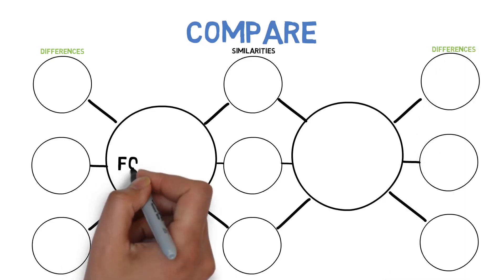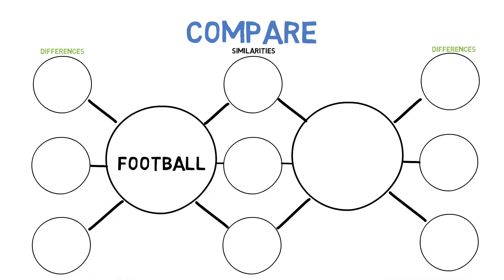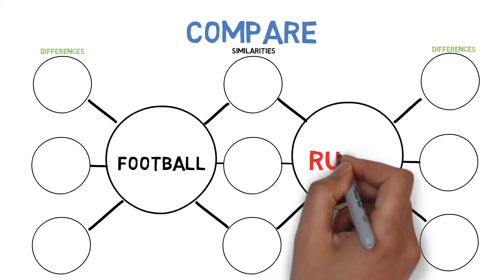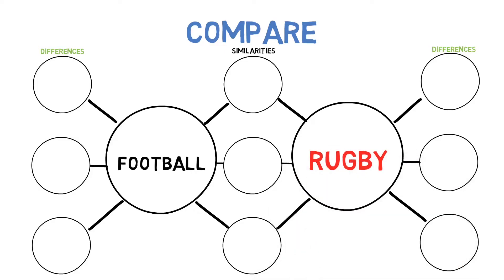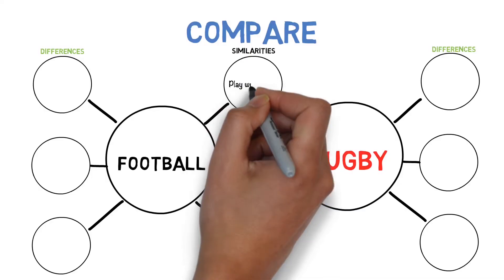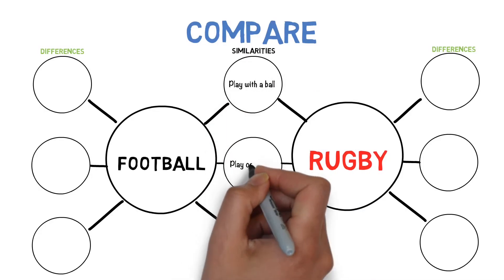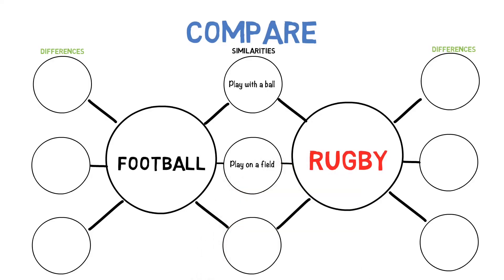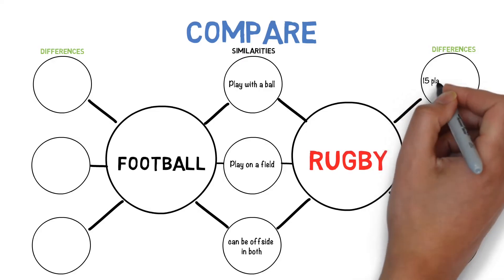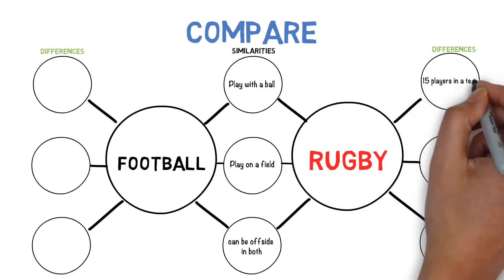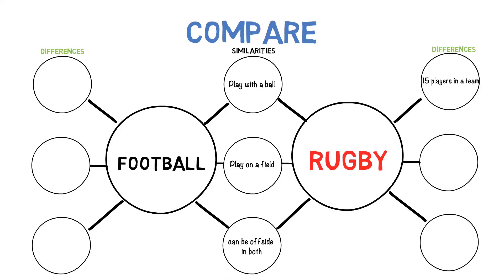So the example that I'm going to give here is we could say comparing football to rugby. You might get a question which says compare and contrast, or it could be photosynthesis to respiration. And what we use is the middle bubbles that you can see there to put what the similarities are. So you play with a ball, you play on a field, and then you can have the differences down either side.